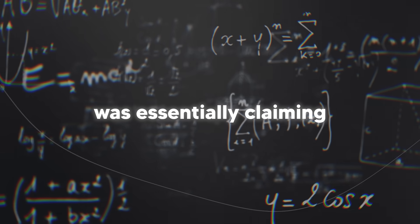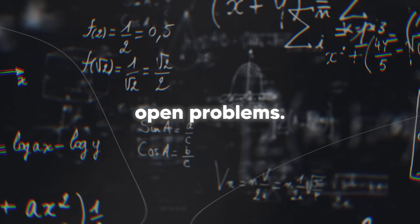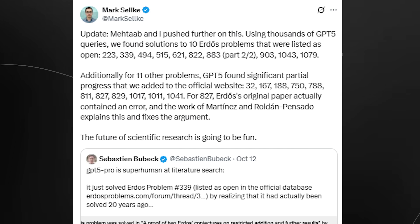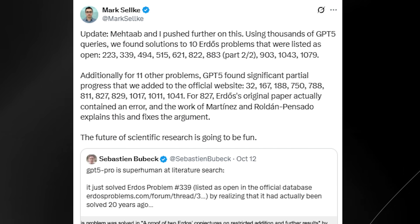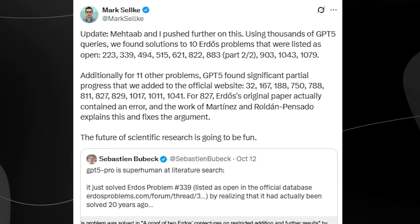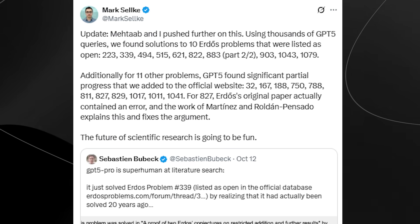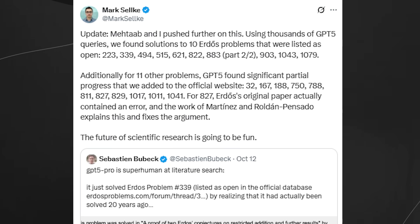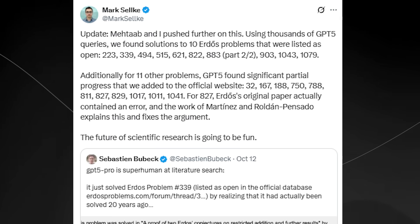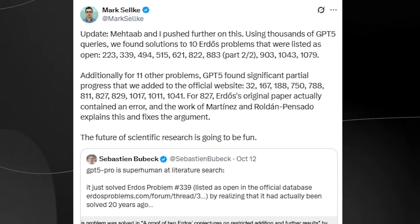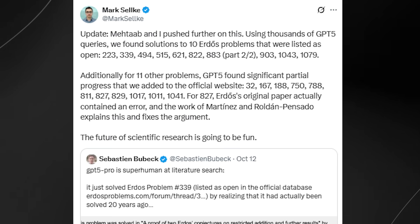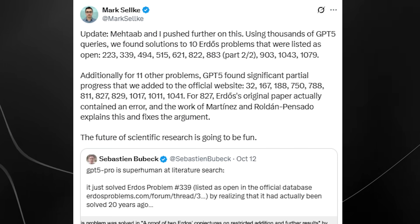So Mark was essentially claiming that he used GPT-5 to solve 10 of these open problems, and he lists them out by number: 223, 253, 339, 494, and so on. And then he says, for 11 more problems, GPT-5 made significant partial progress. He's even calling out specific problem numbers where GPT-5 allegedly helped, like 32, 167, and a bunch more. Now, this part is important. He drops this little bombshell at the end. He says for problem 827, Erdős's original paper actually contained an error, and the work of Martinez and Roldan Pensando explains this and clarifies it. So he's out here not only claiming to solve problems, but also saying he found errors in the original work, which is a very, very big claim.